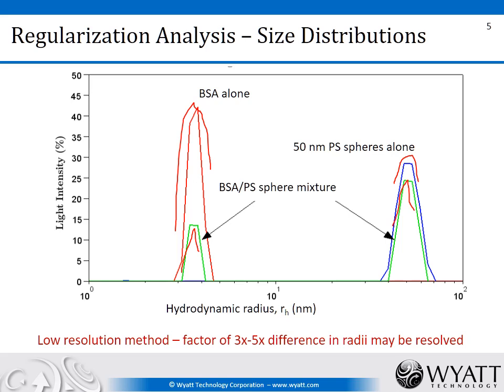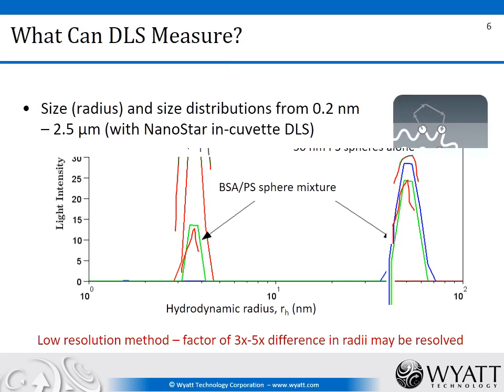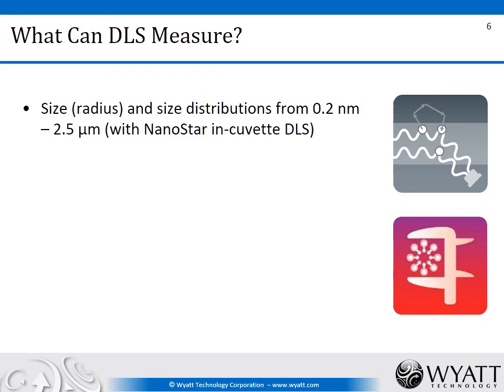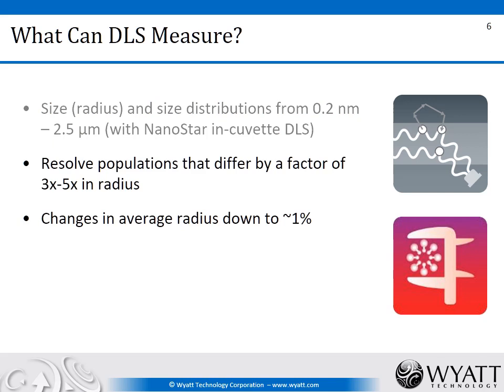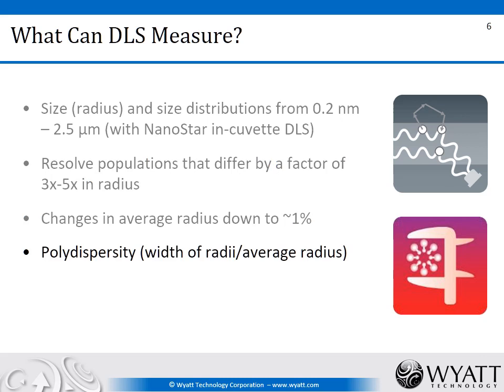DLS is a low resolution method. In order for peaks to be resolved, populations need to differ in size by a factor of at least three to five. Dynamic light scattering can measure size and size distributions covering radii from 0.2 nanometers all the way up to 2.5 microns using standard cuvette-based DLS, such as the DynaPro NanoStar. You can resolve populations that differ by a factor of three to five in radius. Even with a single population, you can measure changes in average radius down to about 1%, and also measure polydispersity.